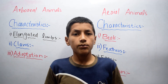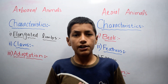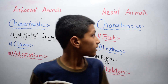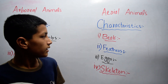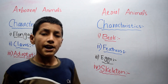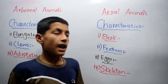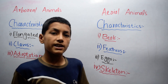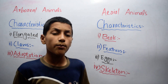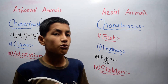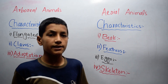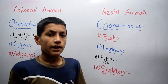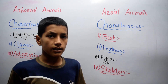Let's come to the characteristics of aerial animals. The first characteristic is beak. Aerial animals have a beak which helps them to break food into small pieces so they can eat easily.